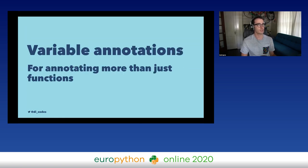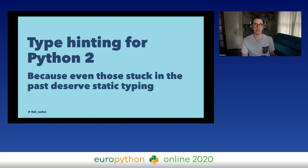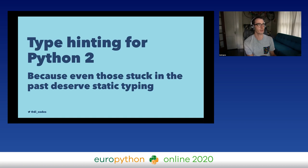He also wanted to add variable annotations so we could annotate more than just functions. Instead of having an unannotated variable, we could add a comment called a type comment, which gives us a type annotation for that line without changing the Python syntax. He also wanted to support type hinting for Python 2, because function annotations only existed in Python 3 at the time — so even people stuck on Python 2 could adopt static typing using type comments.